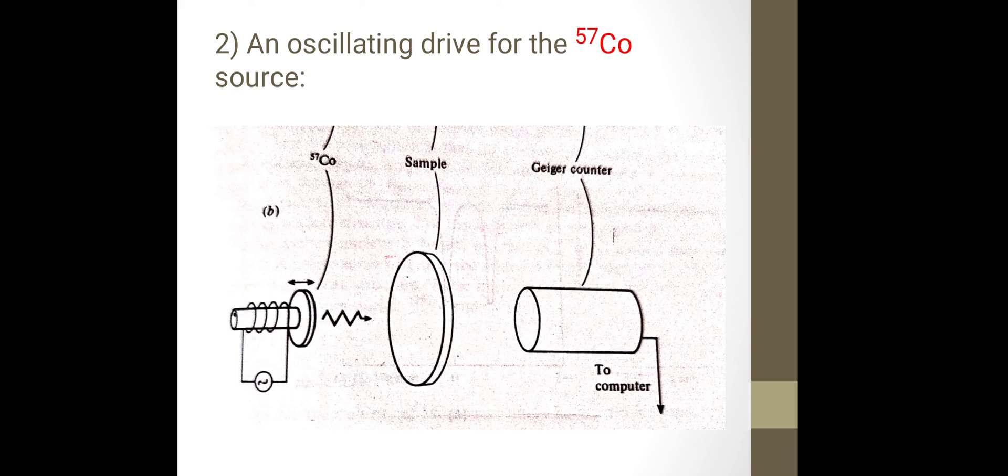At the extremes of its motion, when it comes back and goes forth, there are two extremes. At those extremes of its motion, it will have zero velocity relative to the sample. Whereas at the center, when it goes back and forth, it will have maximum velocity either towards or away from the sample.